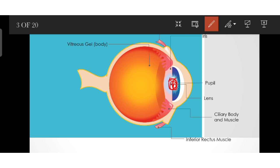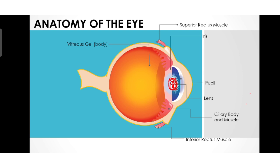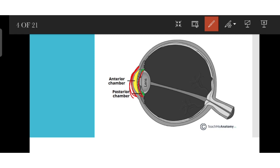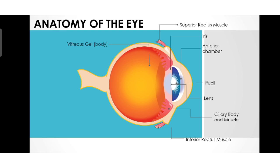Now let's move on to the anterior chamber. The anterior chamber is the front part of the eye between the cornea and the iris. We can see in this image that the anterior chamber is present between the cornea and the iris — shown as the yellow colored zone. The depth of the anterior chamber lies between 1.5 to 4 mm, and it tends to become shallower at older age and in eyes with hyperopia.